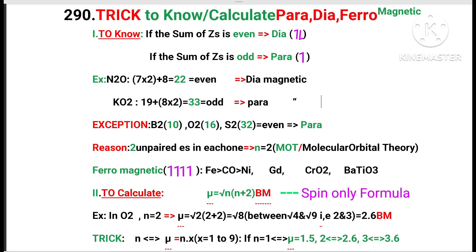That is root 8. It lies in between root 4 and root 9, which have perfect squares. That is, its value lies in between 2 and 3, that is 2.6 BM. BM is unit of magnetism.